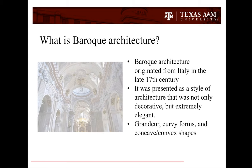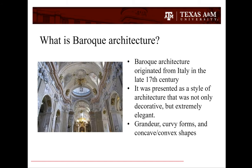What is Baroque architecture? Baroque architecture originated from Italy in the late 17th century. It was presented as a style of architecture that was not only decorative, but extremely elegant. Some of its characteristics are grandeur, curvy forms, and concave and convex shapes.